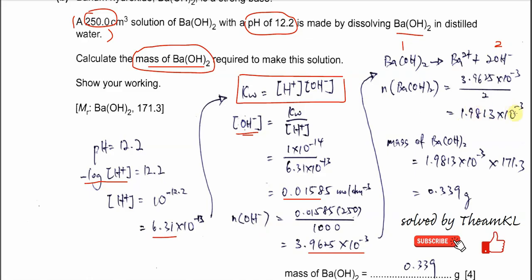Finally, use the moles of barium hydroxide to calculate the mass required. Since moles = mass / molar mass, mass = moles × molar mass = 1.9813 × 10⁻³ × 171.3 = 0.339 g.